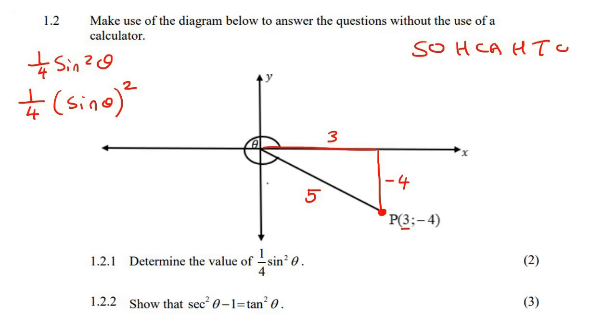So we can use SOHCAHTOA, or however else you like to do it. Some learners like to use y over r, x over r, y over x for sin, cos, and tan. That's also okay, whatever you're comfortable with. But I like this method. So we're going to go look for sin of theta. You can just take it as that little angle there. And so sin is always going to be opposite over hypotenuse. So what is the opposite? Well, that would be negative 4. And then what is the hypotenuse? The hypotenuse is always the longest side of the triangle, and that's 5.